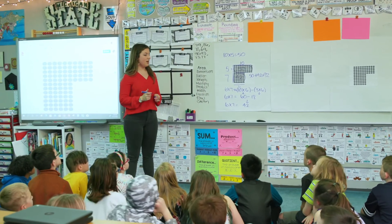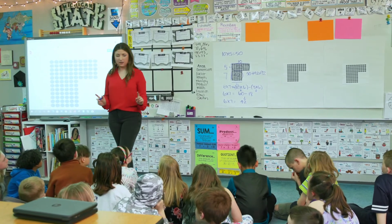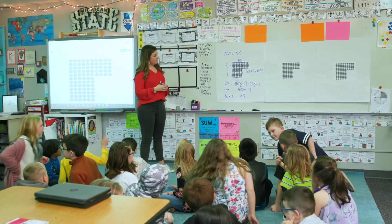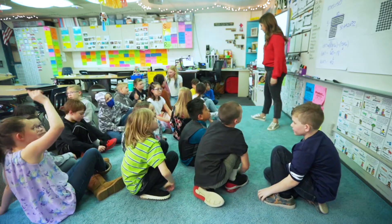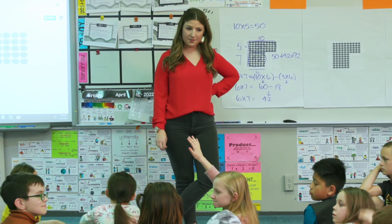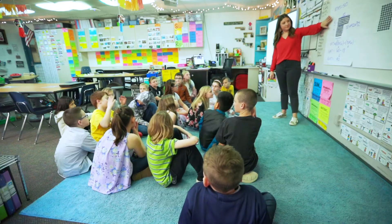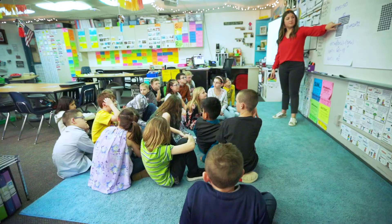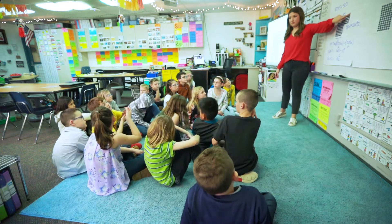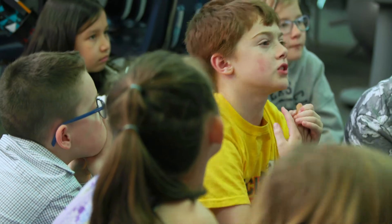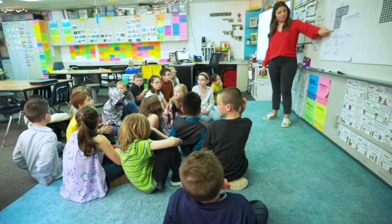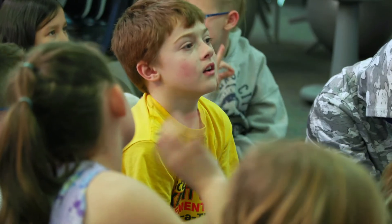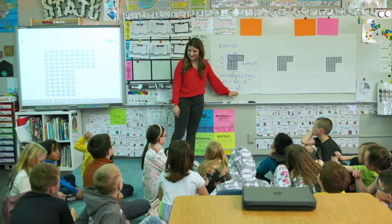I want to pause for a second. I'd like you to turn to your neighbor and paraphrase Brennan's strategy. What kind of math do you see him doing here? How did he figure this out? So what you did is you saw at the top right part, you saw that was 50 because there were five rows and ten columns. And on the bottom you saw 42 because there were seven rows and six columns. And you did six times seven equals 42. Is he right? Yeah. Nice job.